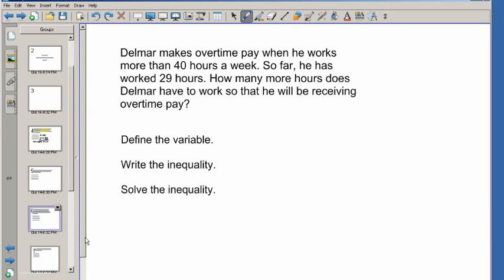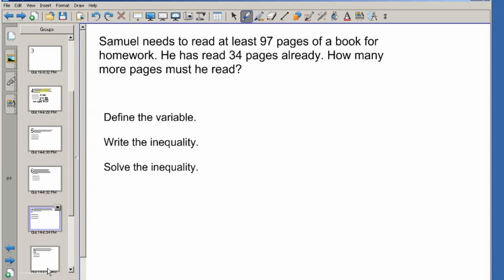Samuel needs to read at least 97 pages of a book for homework. Think about what at least 97 looks like and see if you can get there if you start with the 34 pages he's already read.